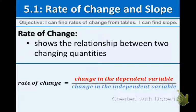Let's begin by defining rate of change. Rate of change shows the relationship between two changing quantities. Remember, we talked about this in Chapter 4—changing quantities are known as variables, and often the variables are the labels on the axes, the x and y axes. You can calculate rate of change by taking the quotient: change in the dependent variable over the change in the independent variable.